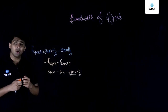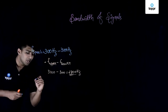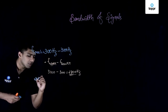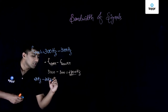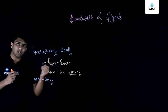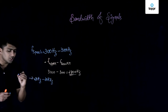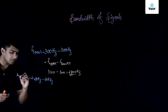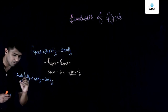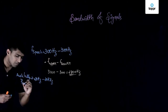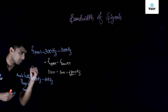We already learned in our lower classes that the audible range of a sound signal is from 20 hertz to 20 kilohertz. So from this we can find out the bandwidth of a sound signal — that is the audibility range of the sound signal.